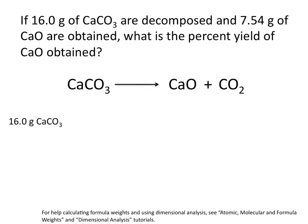So we'll start this calculation with the amount of starting reactant given in the problem. The problem says that we started with 16 grams of calcium carbonate. Now, to convert between calcium carbonate and calcium oxide, we need to first convert calcium carbonate to moles.